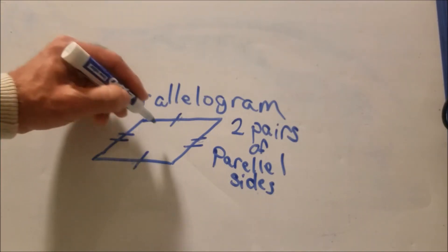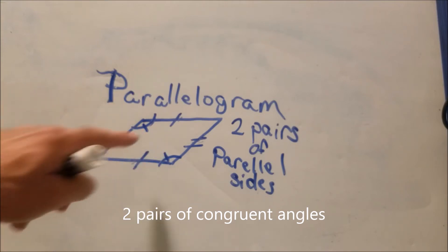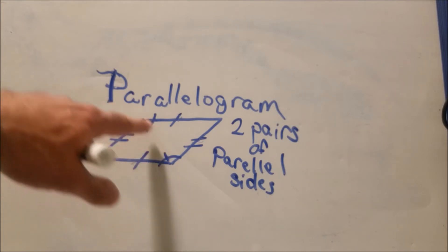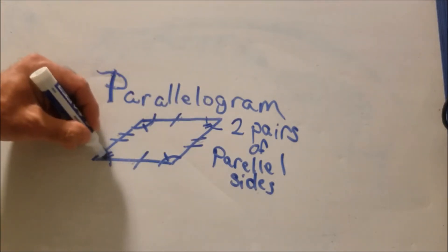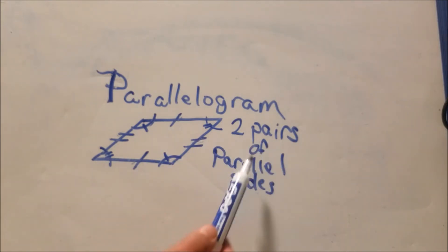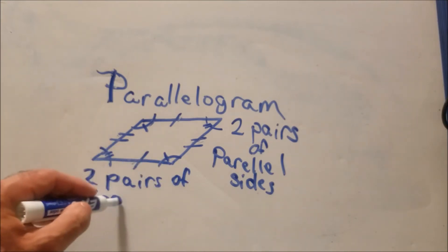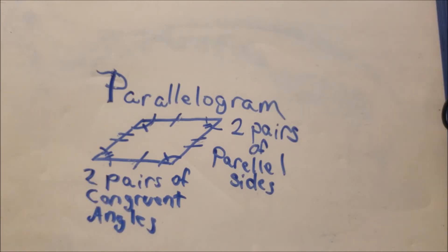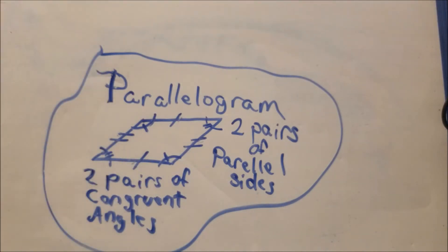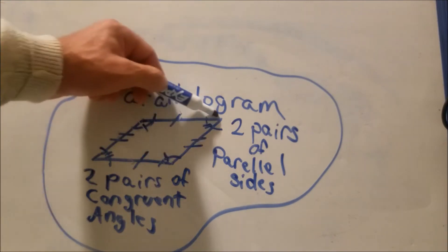A parallelogram also has two pairs of congruent angles. We mark them with slash marks: the angles diagonal from each other are equal, so one pair gets one slash mark and the other pair gets two slash marks. So a parallelogram has two pairs of parallel sides and two pairs of congruent angles.